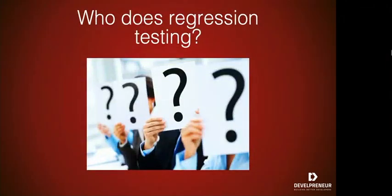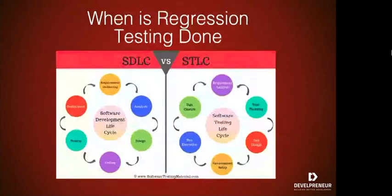Who does regression testing? Regression testing is done by a combination of QA testers and developers, doing a combination of manual and automated testing against the final build of an application. We typically don't want to do regression testing too early in the cycle, because if you're still having changes made to the system, doing early regression testing is more like smoke testing than regression testing.